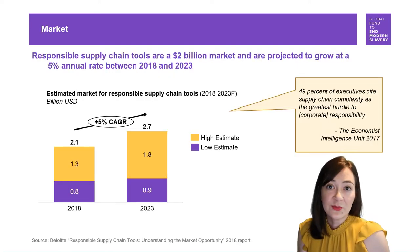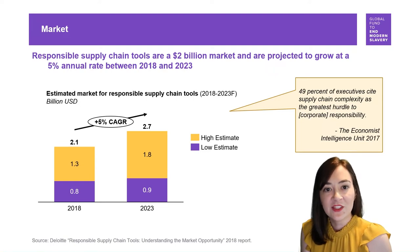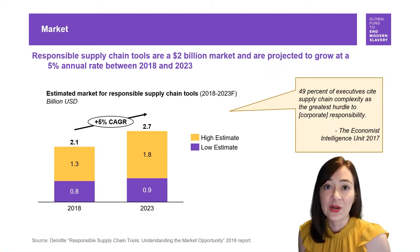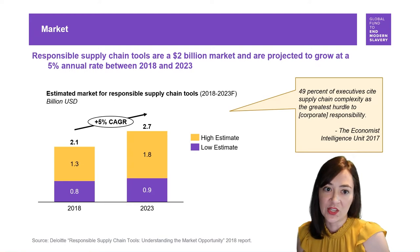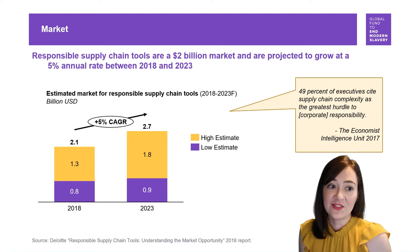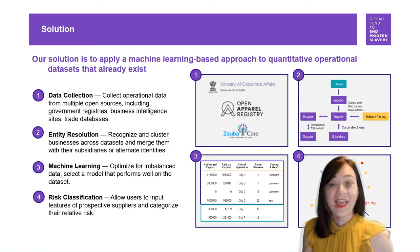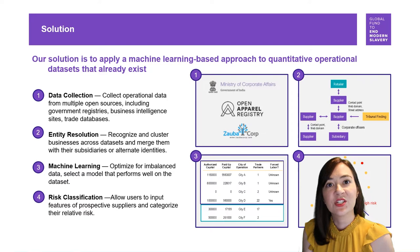Responsible supply chain tools are now a $2 billion market and are projected to grow at a 5% annual rate between 2018 and 2023. 49% of executives cite supply chain complexity as the greatest hurdle to corporate social responsibility.